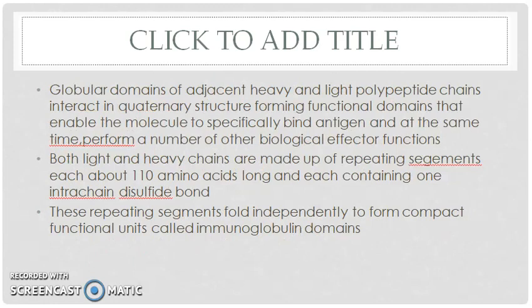The globular domains of adjacent heavy and light polypeptide chains interact through the quaternary structure, which forms the functional domains. This enables the molecule to specifically bind antigen and at the same time perform a number of other biological effector functions. Both light and heavy chains are made up of repeating segments, each about 110 amino acids long and each containing one intra-chain disulfide bond. These repeating segments fold independently to form compact functional units called immunoglobulin domains.